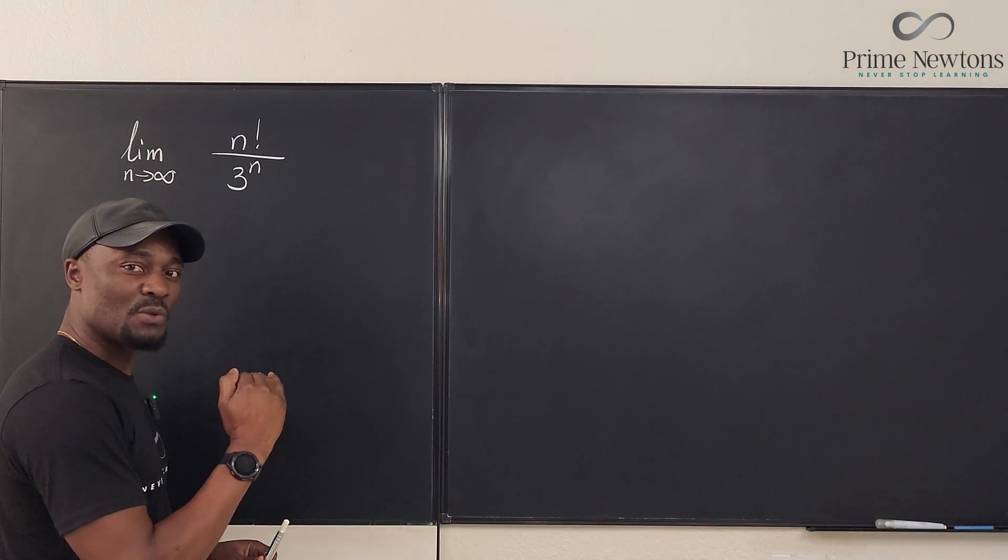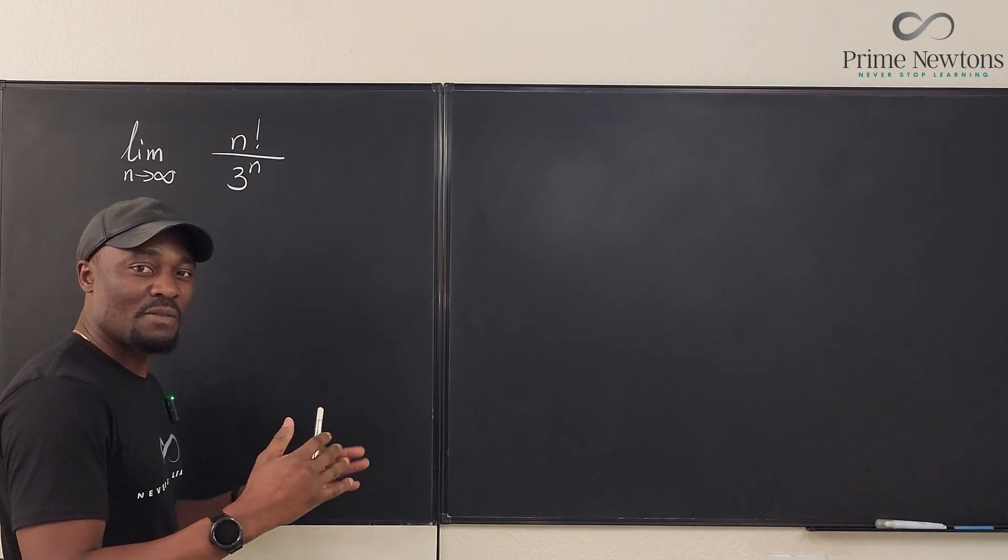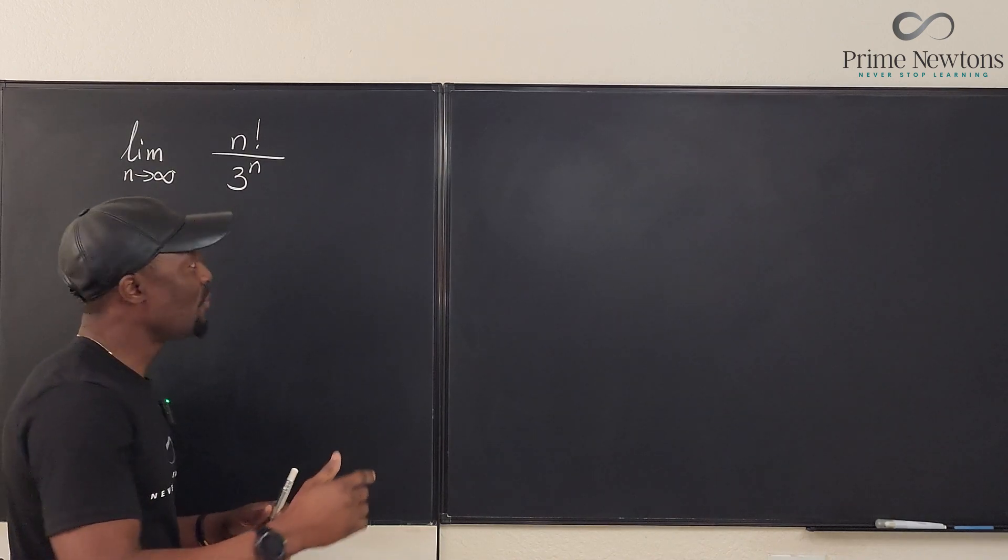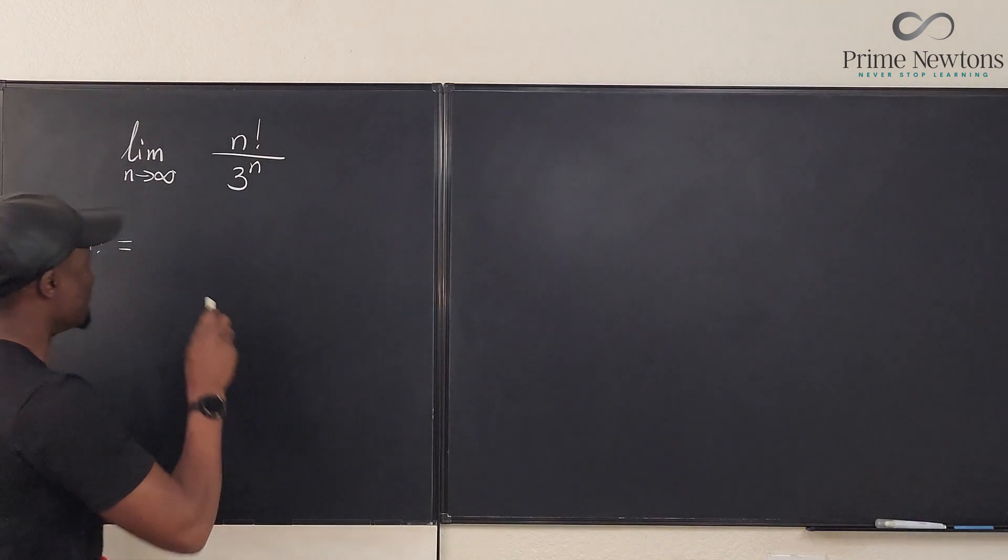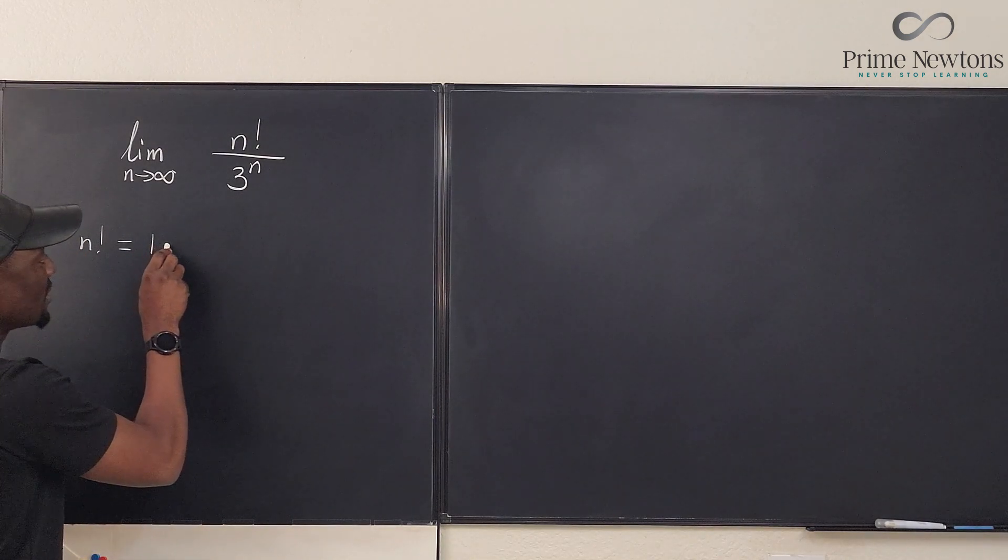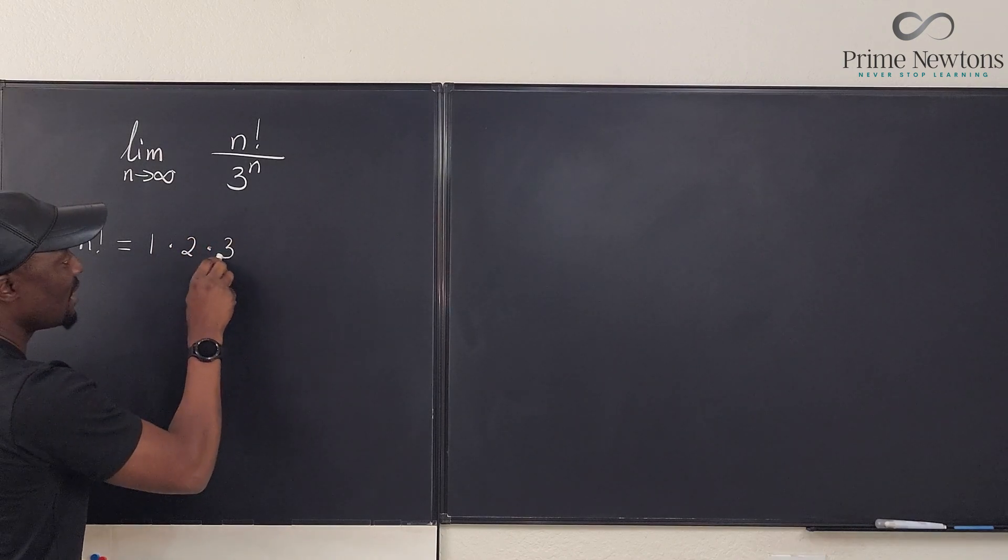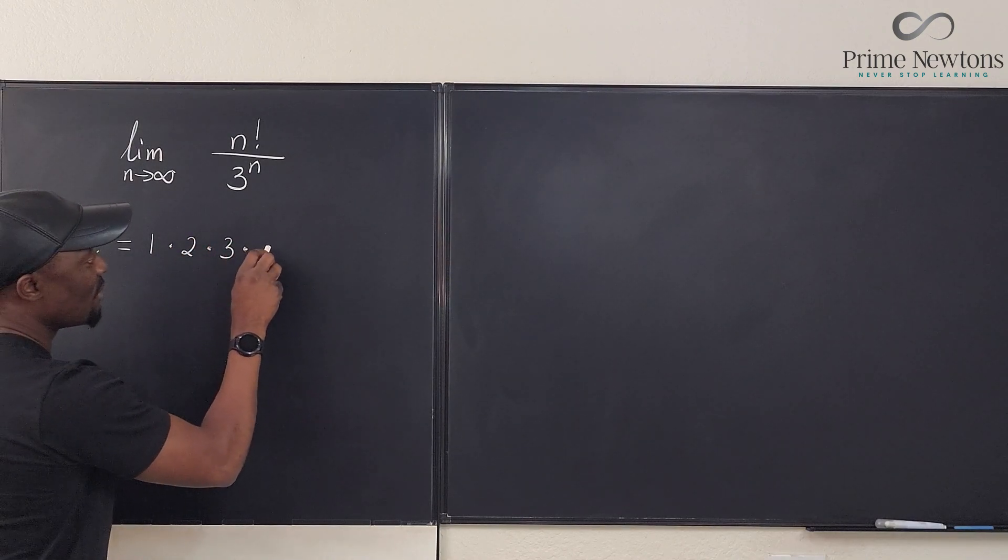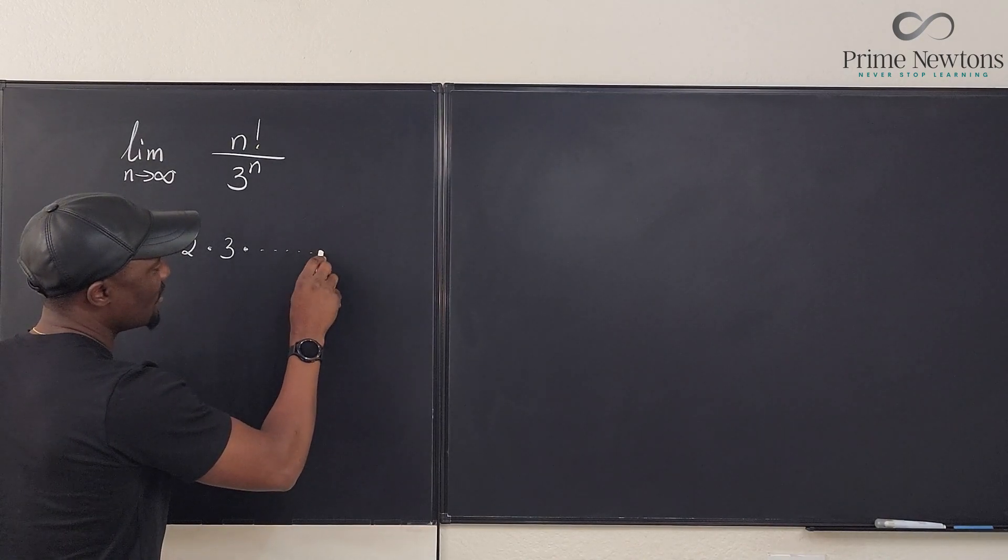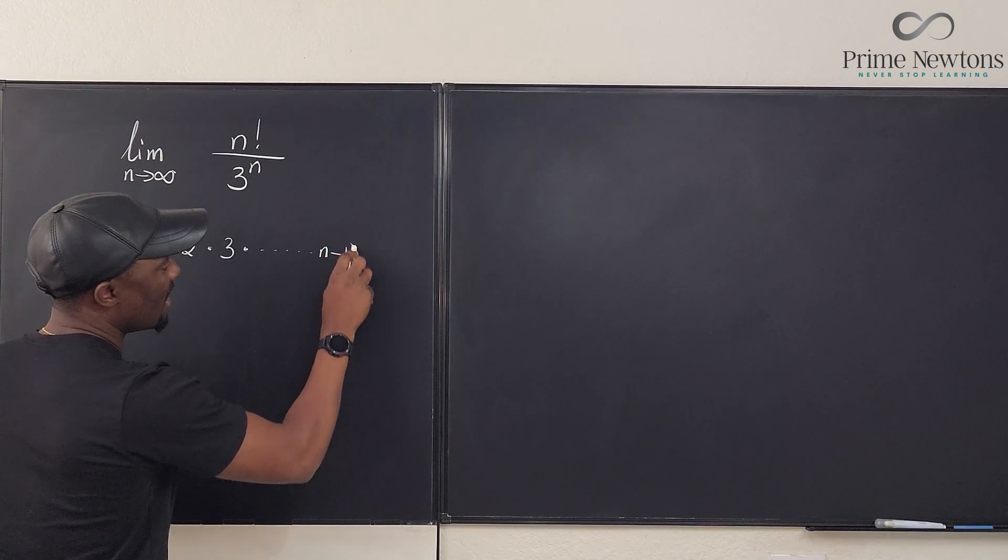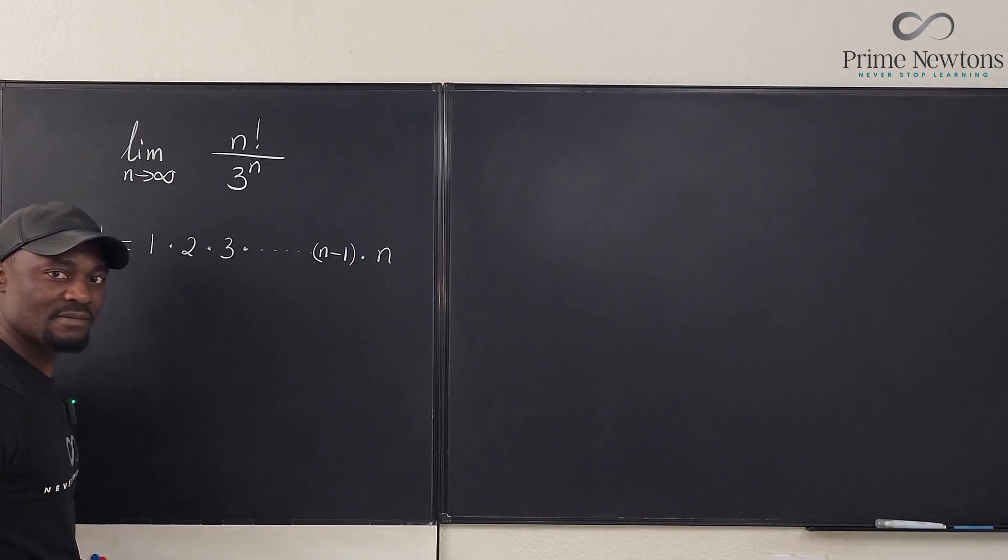You don't want to use that approach here because we want to see, we want to start from what we know to what we don't know. Remember, we don't know n. So it's better to write it in the opposite direction. Write it this way: 1 multiplied by 2 multiplied by 3, just keep going until you get to n minus 1 and then multiplied by n. We don't know what n is.